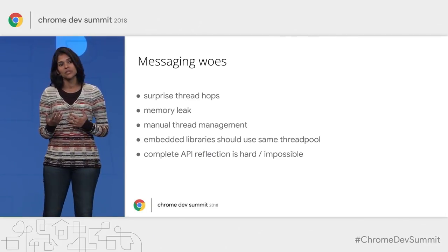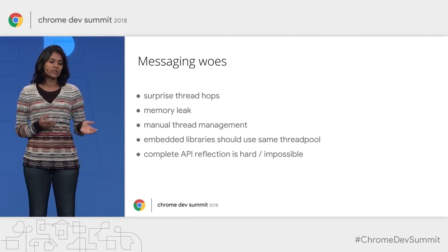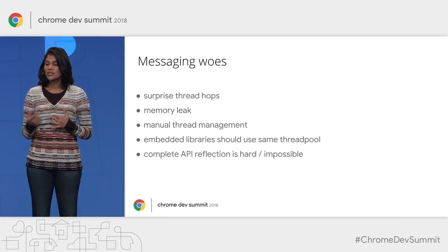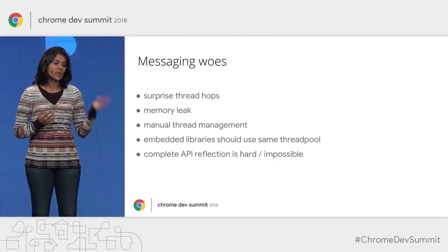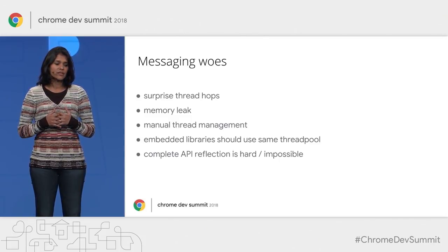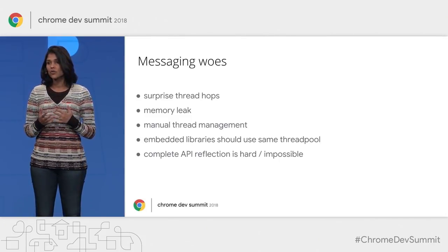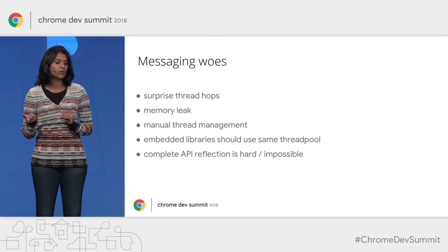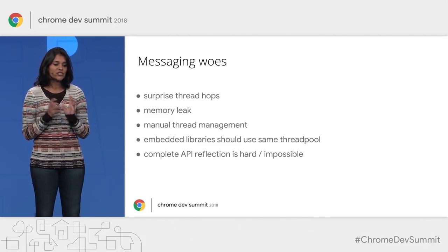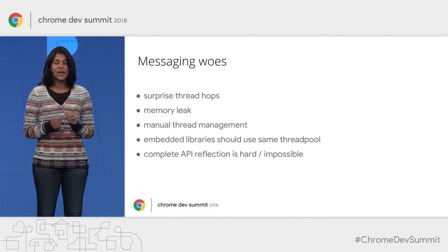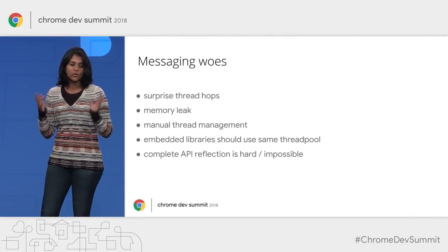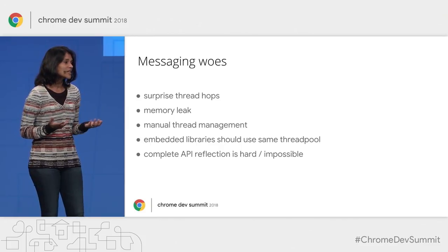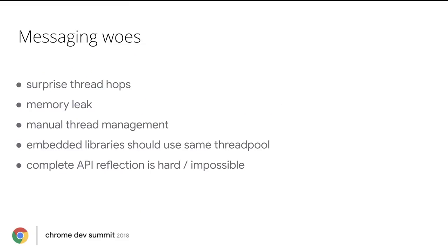Every method call to a proxied object incurs the cost of a thread hop, which can come as a surprise to developers. Platform gaps can cause memory leaks in these APIs. These APIs do not really have a notion of a backing thread pool or a concept of managing threads and resizing the pool. Embedded libraries are not able to share the same thread or thread pool, and for complex APIs it can be impractical to recreate this API surface.